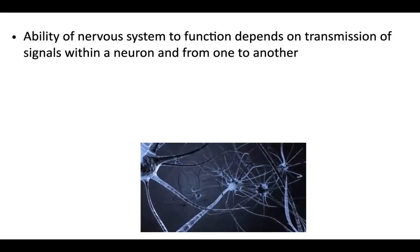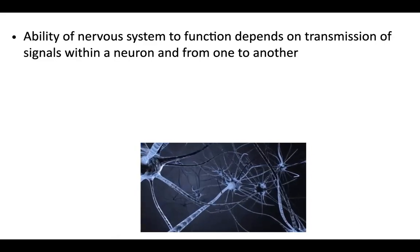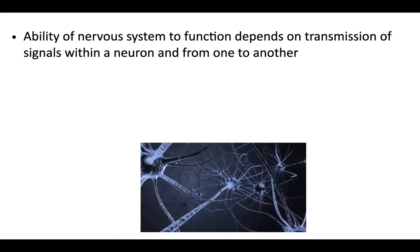This is an animation of how nerve impulses work. The first thing I want to point out is that they always go in one direction. Nerve impulses always go from the dendrites — these long extensions — through the cell body, down the axon, to the axon terminals. The ability of your nervous system to function depends on the transmission of these signals within a neuron and from one neuron to another.